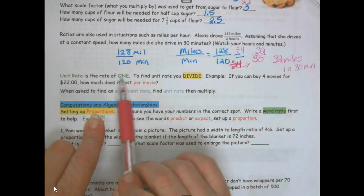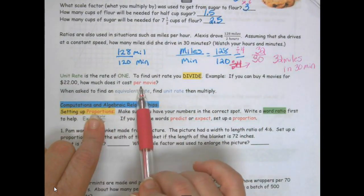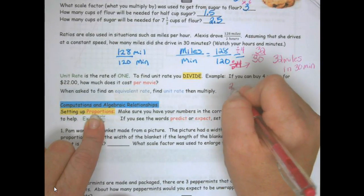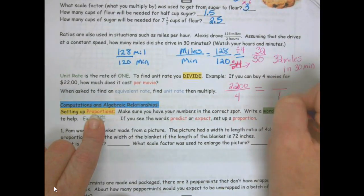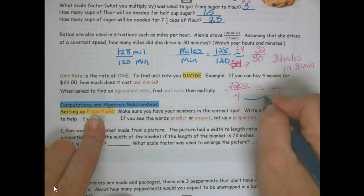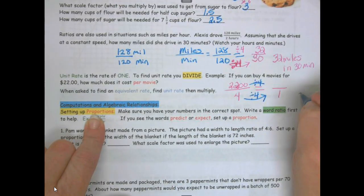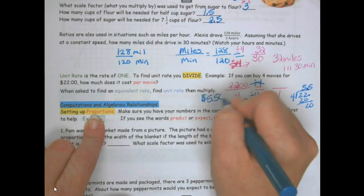Unit rate is the rate of 1. To find the unit rate, you divide. Example, if you have 4 movies for $22, how much does it cost per movie? $22 for 4 movies. How much for 1 movie? How does 4 go to 1? Divide by 4. $22 divided by 4. So it costs $5.50 for 1 movie ticket.